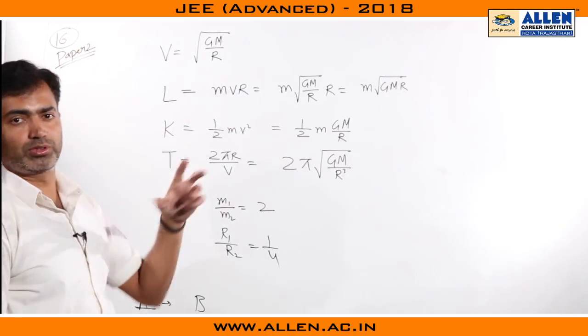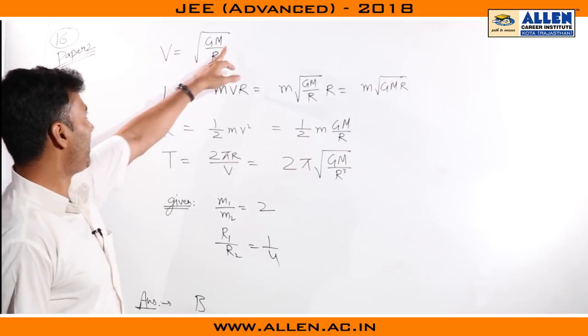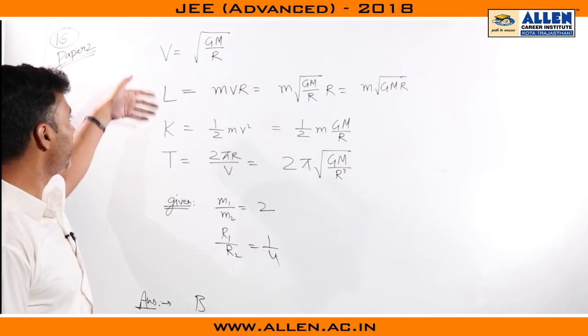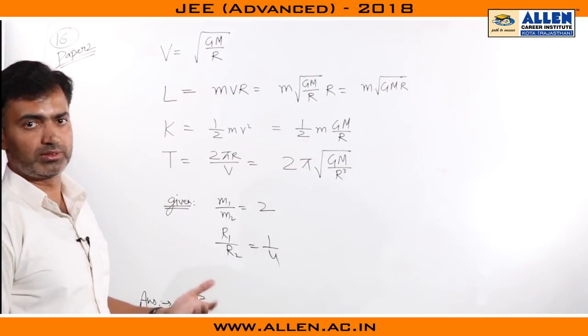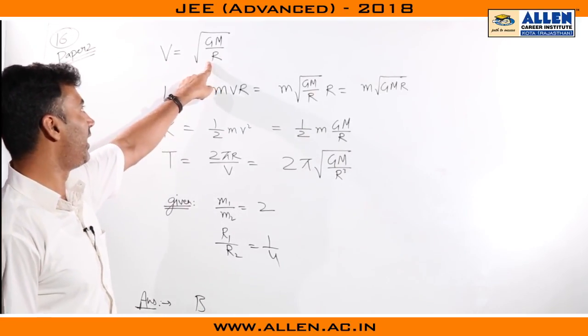Paper 2 question number 16. Two satellites were revolving around the sun of mass capital M. The various quantities that we can calculate are orbital velocity which would be under root GM by R.